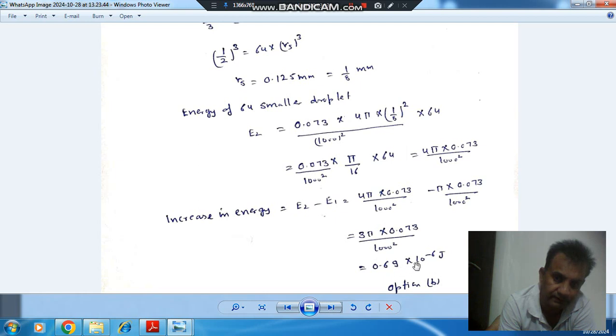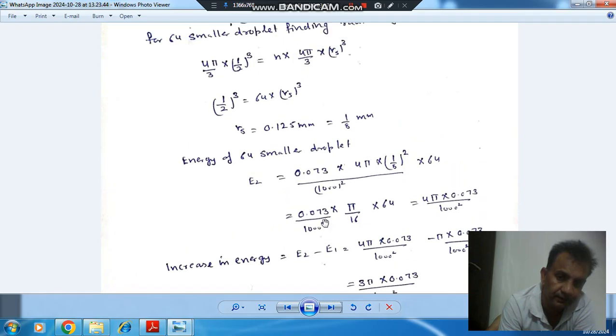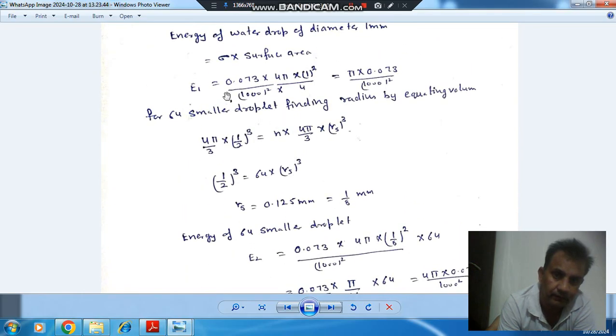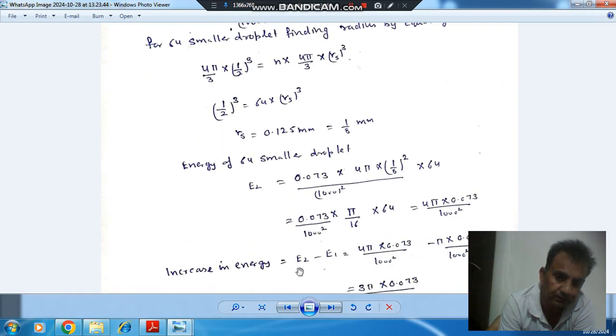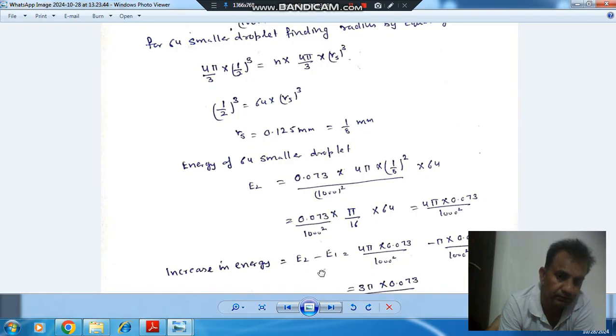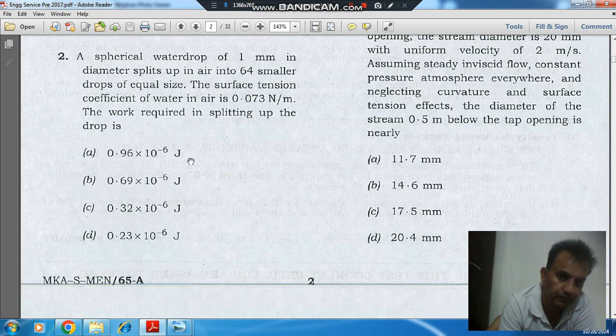Evaluating this gives 0.69×10⁻⁵ J. This is the energy required to break this 1 mm diameter droplet into 64 droplets. The answer is Option B.